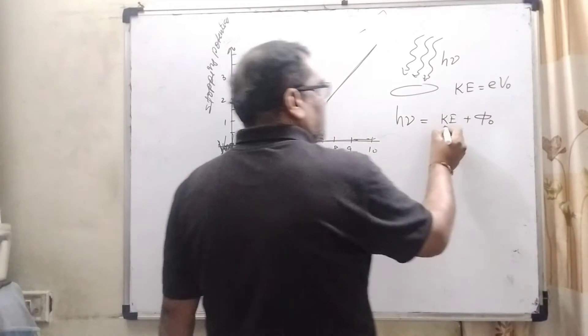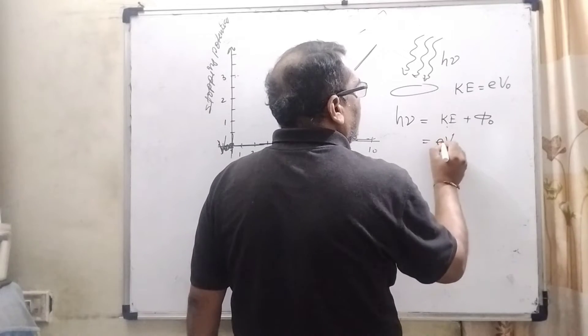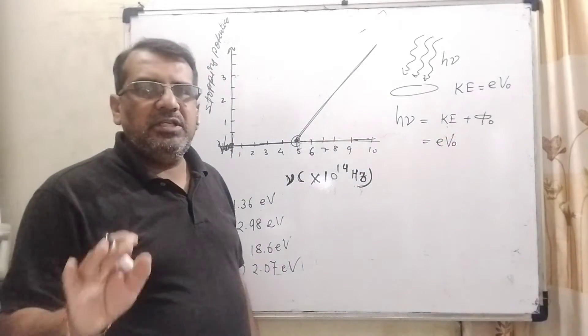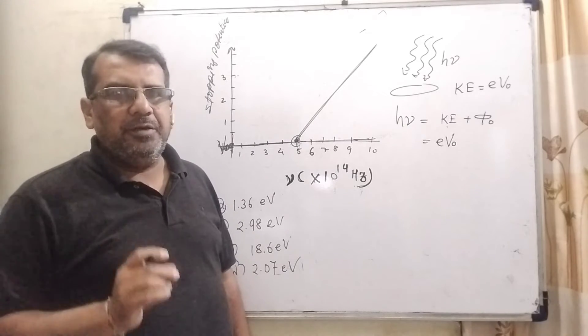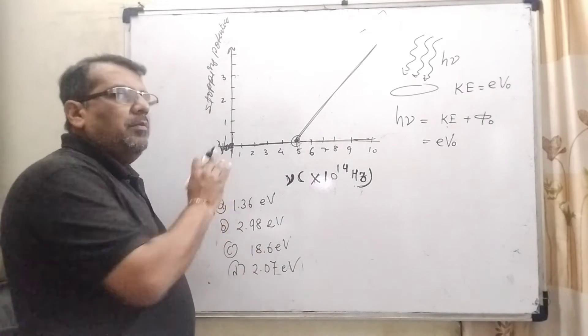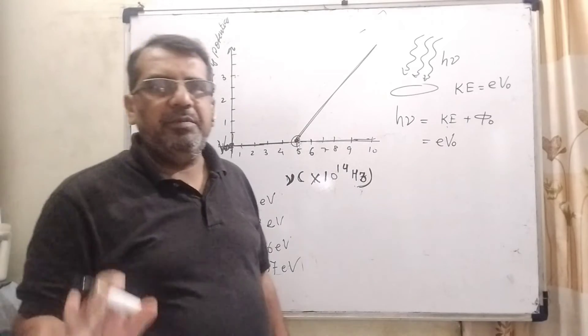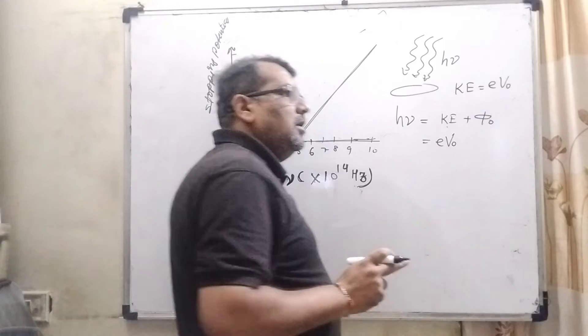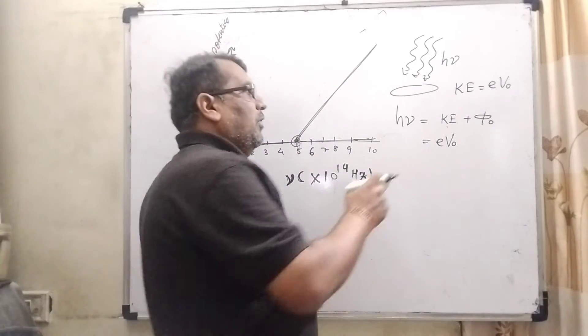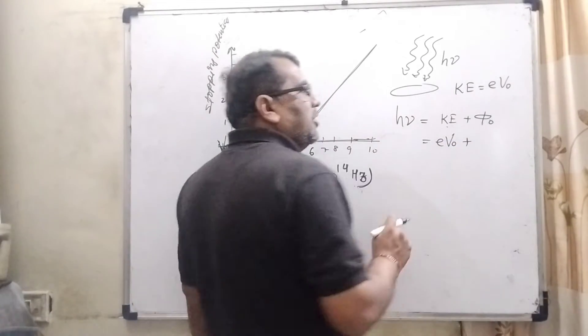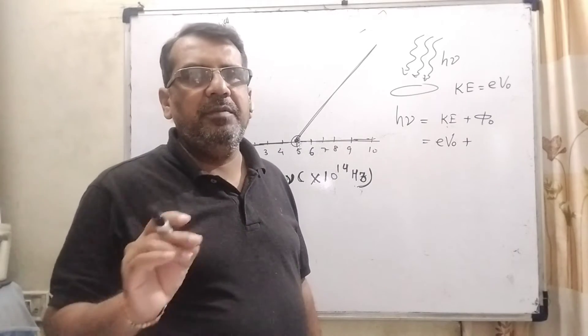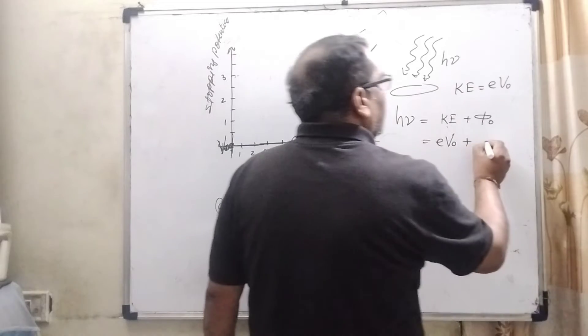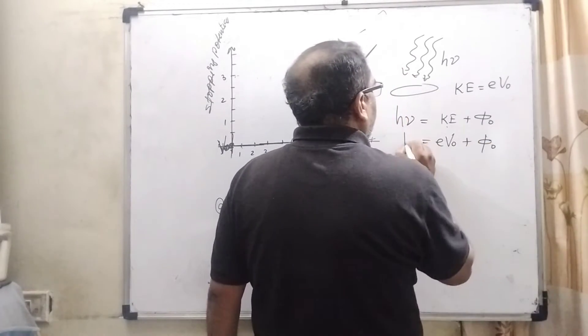Here V0 is the cutoff potential. What does it mean? Cutoff potential means the potential where the amount of photoelectric current becomes zero. So we can say that is cutoff potential or stopping potential. And what is work function? Work function means minimum energy required to liberate the electron from the metallic surface. So here it is φ0 and hν.